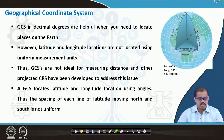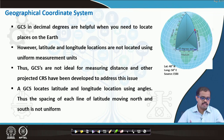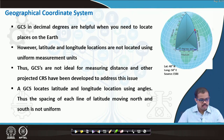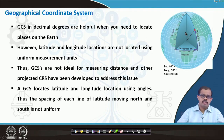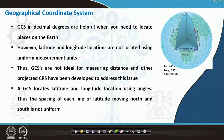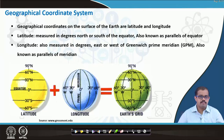Latitude and longitude locations are not measured using uniform measurement units — that is one of the major disadvantages of GCS. GCS is not ideal for measuring distances; other projected CRS have been developed to address this issue. The GCS locates latitude and longitude using angles, so the spacing of each line of latitude moving north and south is not quite uniform. You can never measure distance in a GCS system, whereas in a projected coordinate system it is much easier.